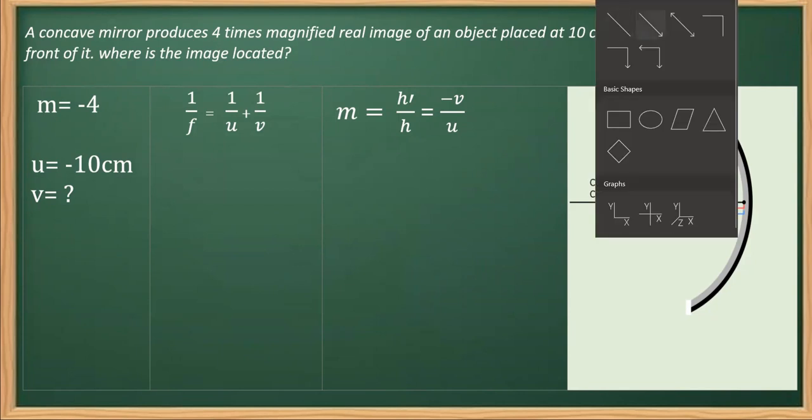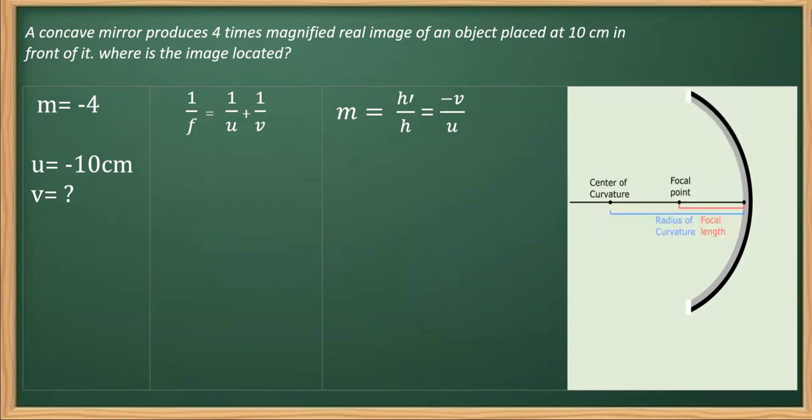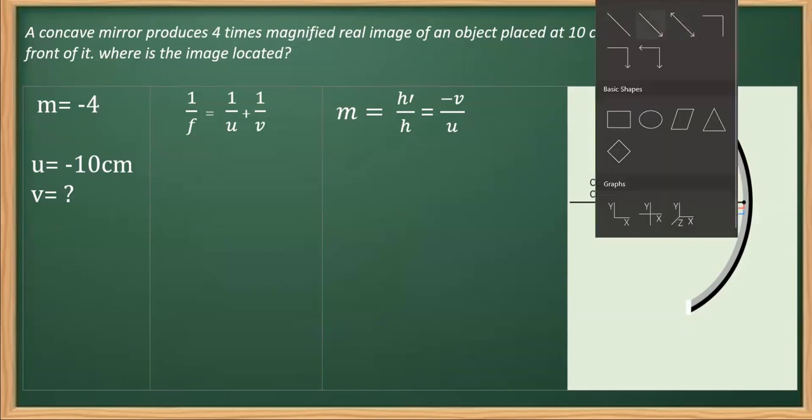You should also note that the image formed is real and inverted and magnified when the object is between f and c. So in this case, the image formed is real, inverted, and it is larger in size.